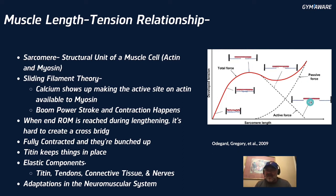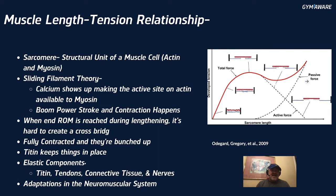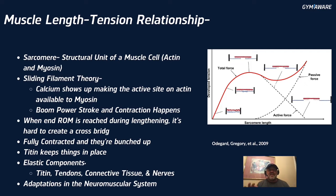When the muscle is completely lengthened, the myosin can't make a cross-bridge and grab any actin, so it's really hard to produce force. The same thing goes when the muscle is fully contracted — they push up against each other, so not much force can happen. But it's not just about actin and myosin — there's also passive force from titin, tendons, connective tissue, and nerves, plus adaptations in the neuromuscular system itself.